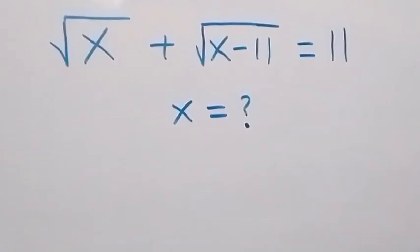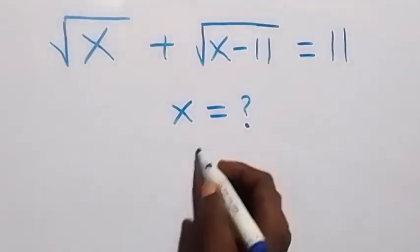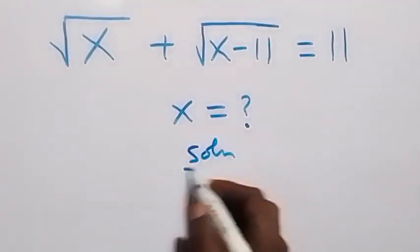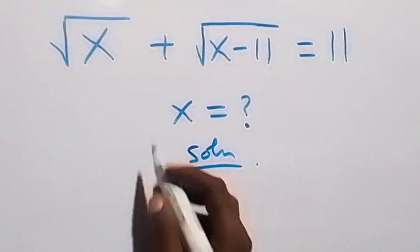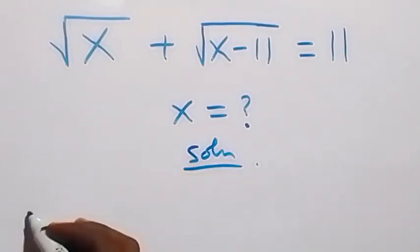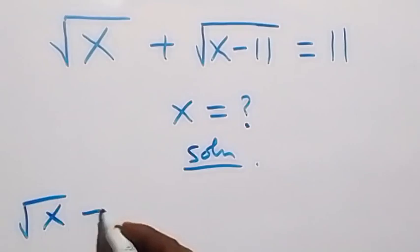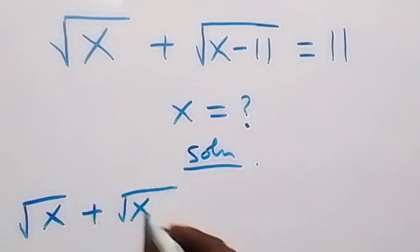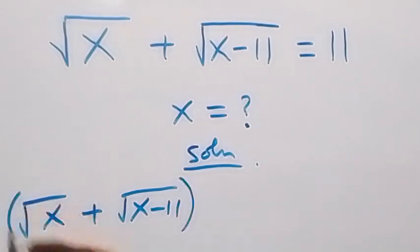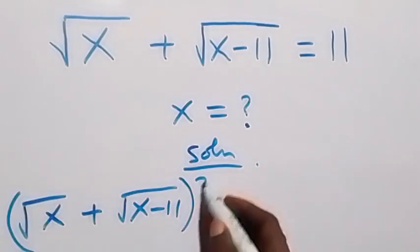Hello, welcome to how to solve for x in this nice squares problem. From what we have here, let's square both sides: we have root x plus root of x minus 11, all squared.